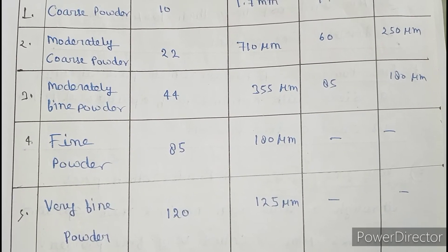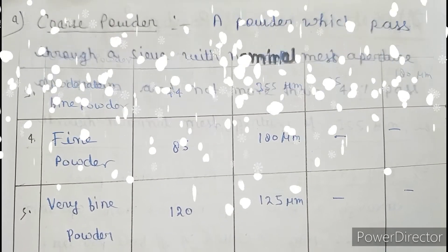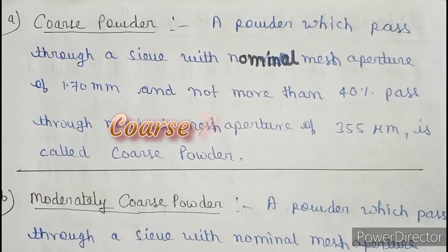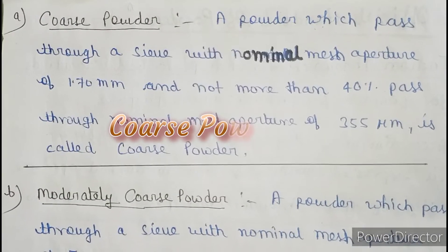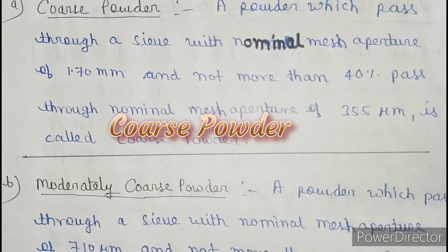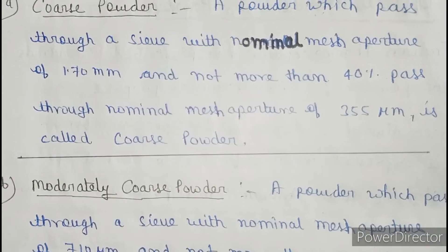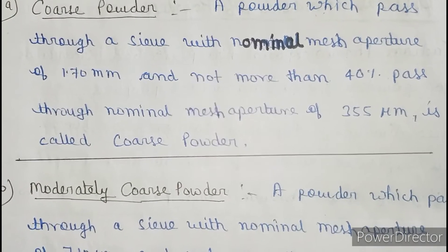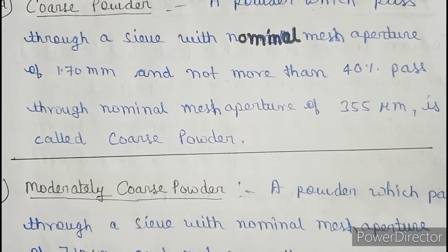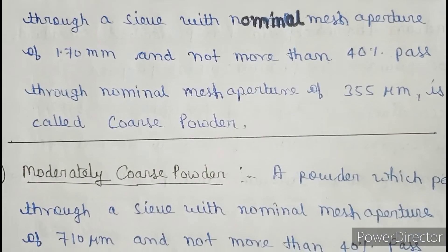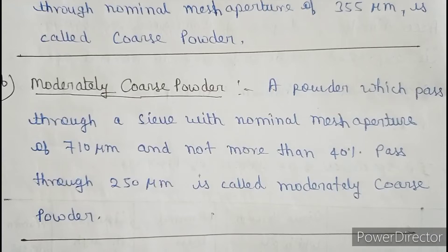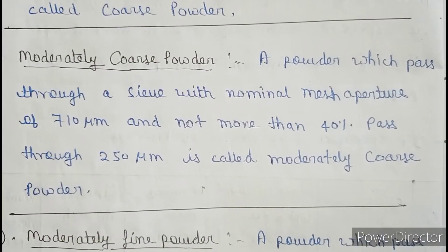A powder which passes through a sieve with a nominal mesh aperture of 1.7 mm, and not more than 40 percent passes through the nominal mesh aperture of 355 micrometers, is called coarse powder. Moderately coarse powder is a powder which passes through a sieve with a nominal mesh aperture of 710 micrometers, and not more than 40 percent passes through 250 micrometers.